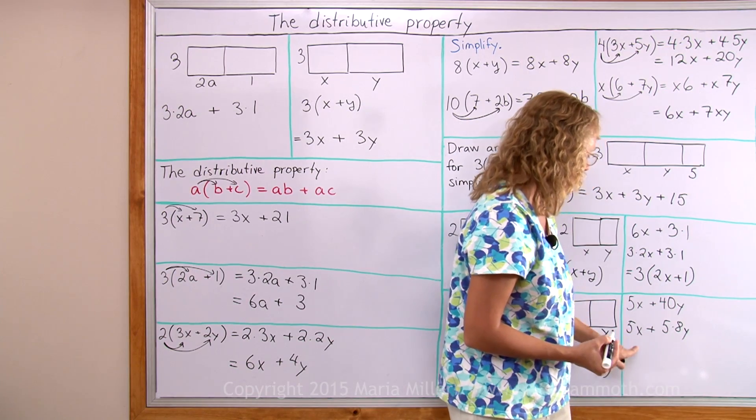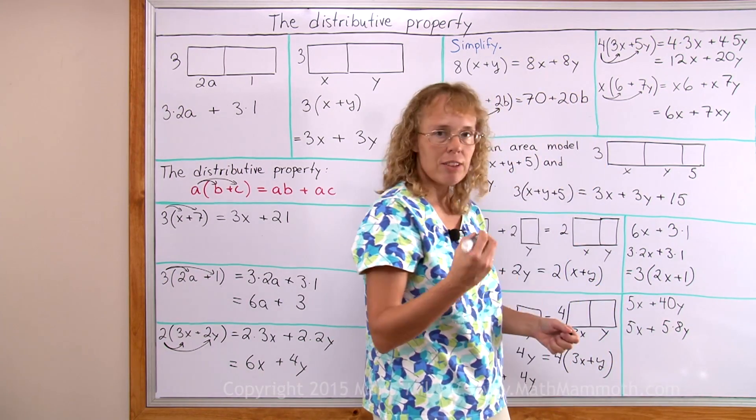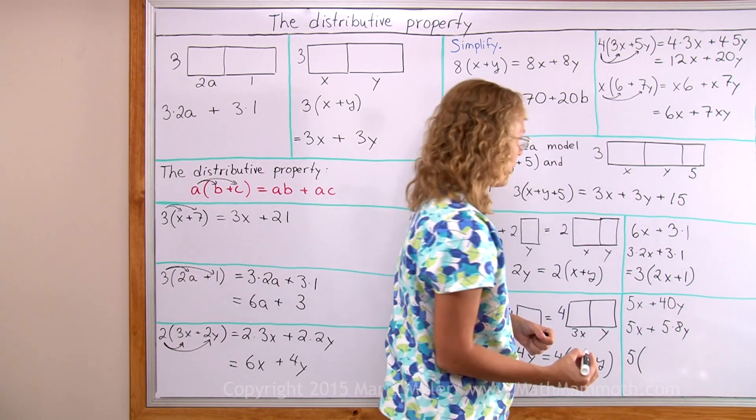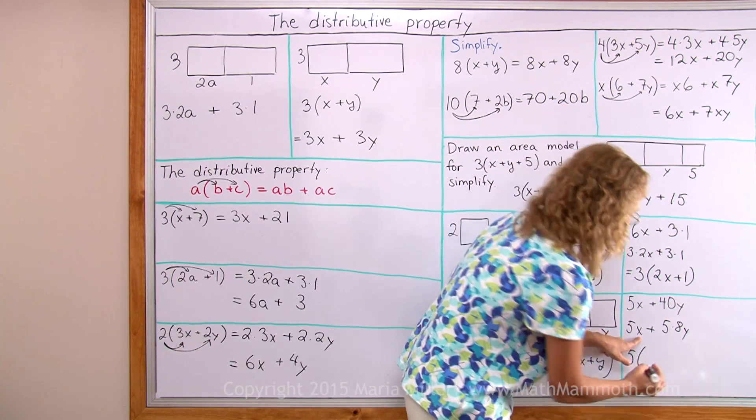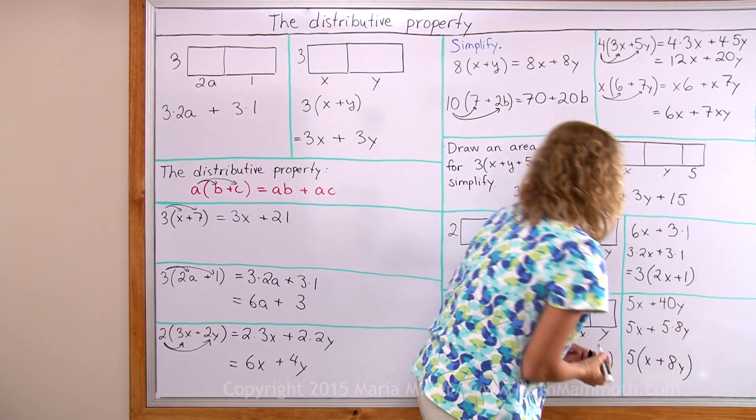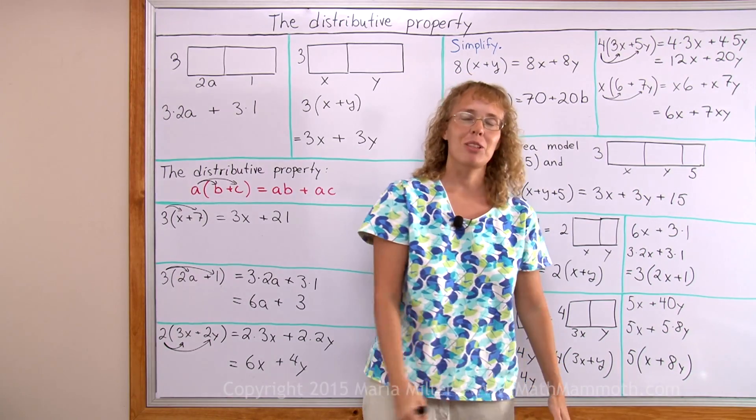Now I have 5 times x, 5 times 8y. 5 is my common factor, so I put that in front of the parentheses. And then what is left here is x plus 8y over there. And we are done. I hope this was helpful.